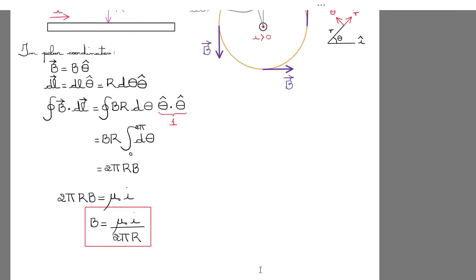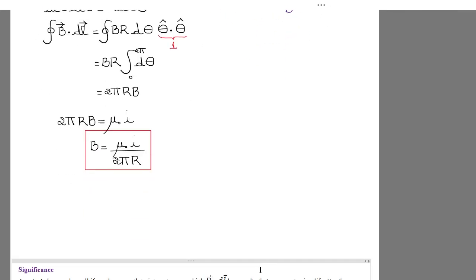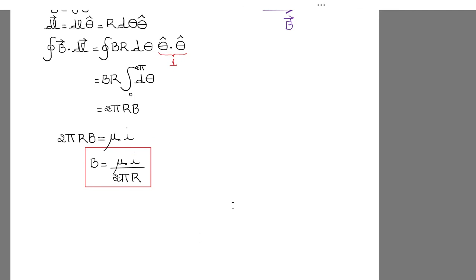And what is the significance of that? Well, as you can see, this is way easier than the previous approach we used. That's the main point. Of course, if I want to write the vector form, the direction would be in the theta-hat direction.